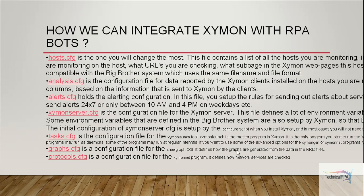You can see some of the configurations related to Xamon: cost analysis, alerts, Xamon server config, task config, graphs config, and protocol config. Based on these configurations it will work and give you 24 by 7 alerts. You can even create task-level alerts, protocol-level alerts, configuration-level alerts, and host server level alerts based on whatever configurations you set up.